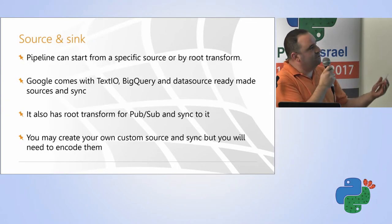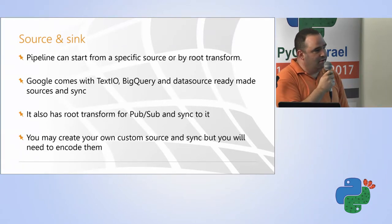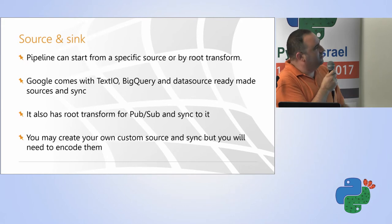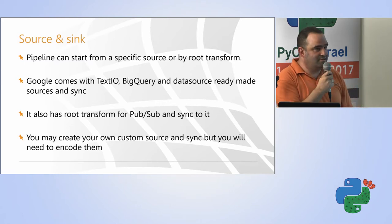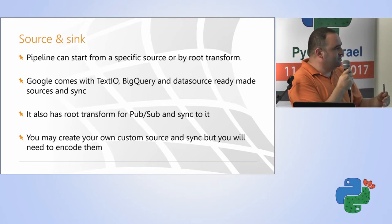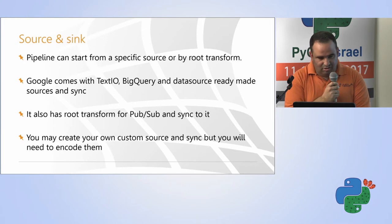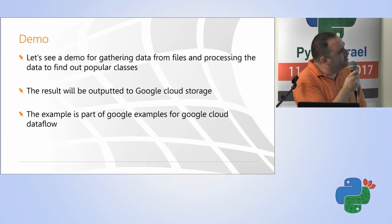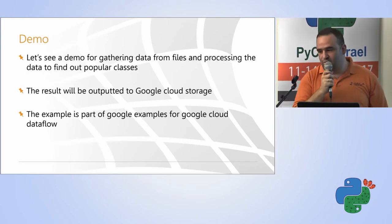And we have source and sync. Source is the entrance point of the pipeline, and sync is the output point, and we have all kinds of connectors, and you can also write your customized code for MongoDB, Couchbase, Cassandra, etc. Okay, let's see the demo, but this is the most important part. Let's see some code.